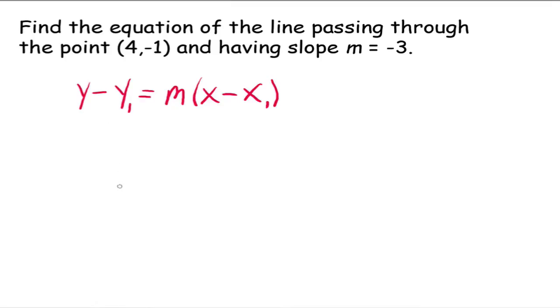All right, so now let's go plug in our information. The x1 and the y1 are going to be replaced with the point that you know your graph goes through, and m is the slope. The other x and y, they're the variables that have to stay as is. So y minus negative 1 equals negative 3 for the slope x minus 4.